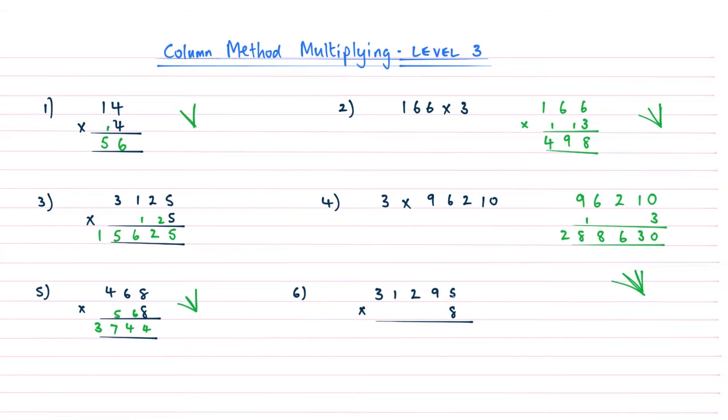Right, and so now we're on to question number 6. So 5 times 8 is 40. 9 times 8 is 72, add that 4, becomes a 76. Remembering to carry the 7.